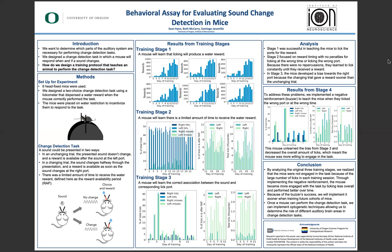Looking forward, the next question was how can I still teach the mice the change detection task? To address the problems, I implemented a buzzer noise that would work as a negative reinforcement to teach the mice when they licked the wrong port or at the wrong time. After several days of training on this stage, the data showed quite a difference. In the first graph, I saw a steady increase in the right and left hits with very few misses on both sides. The data also showed that their bias for the changing trials had gone away with the use of the buzzer. In the second graph, I saw a considerable increase in the percentage of licks that occurred during the RAP, along with an overall decrease in the total number of licks for each training session in graph three. This showed us that the mice were more willing to engage in the task because they were no longer licking excessively and there was not a bias on either side.